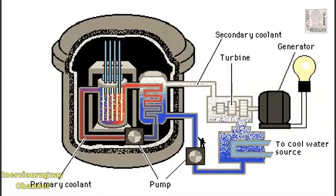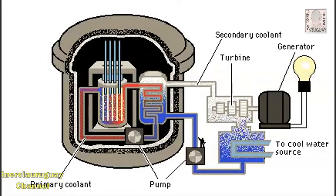Finally, generators produce electricity, which is delivered to a power grid by transmission lines.